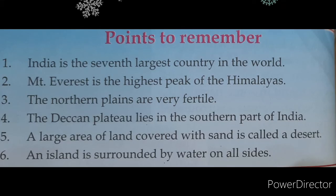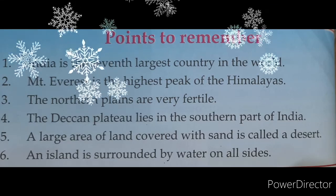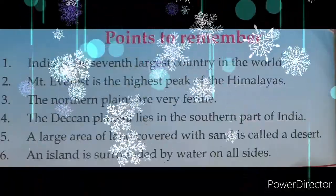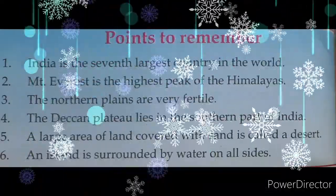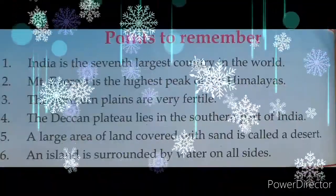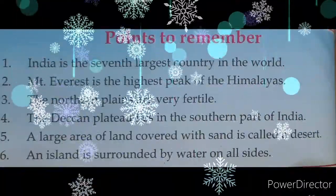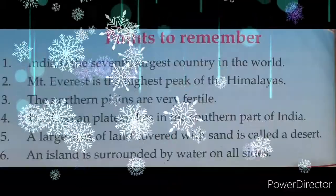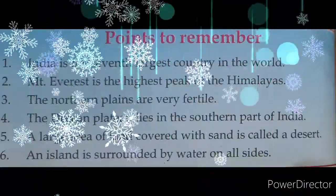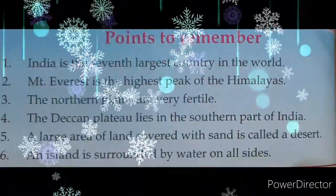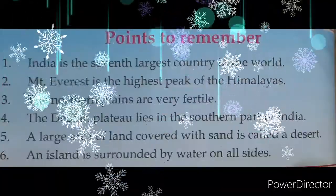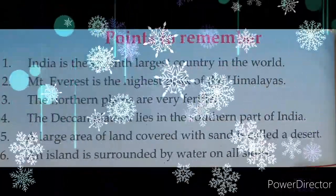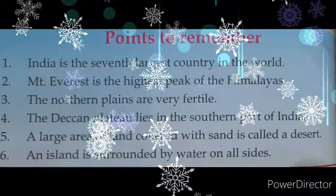Recap: India is the seventh largest country in the world. Mount Everest is the highest peak of the Himalayas. The northern plains are very fertile. The Deccan Plateau lies in the southern part of India. A large area of land covered with sand is called a desert. An island is surrounded by sea water on all sides.